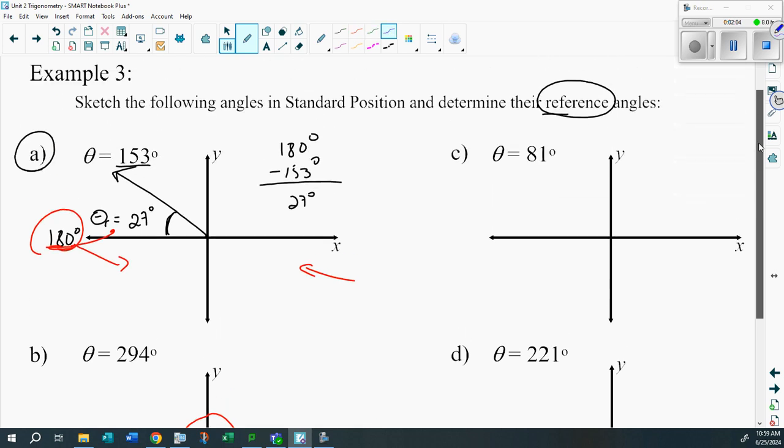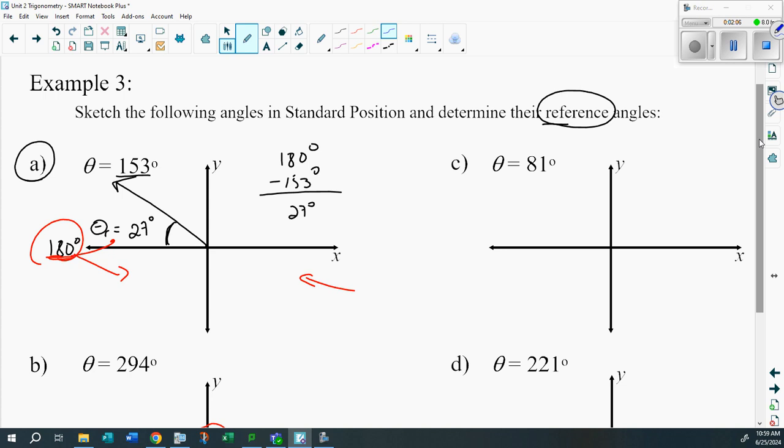Let's go to c. This is a trick question. See if you can figure it out. Yeah, it's right here - 81 degrees is 81 degrees. Guess what? The angle in standard position is also your reference angle.